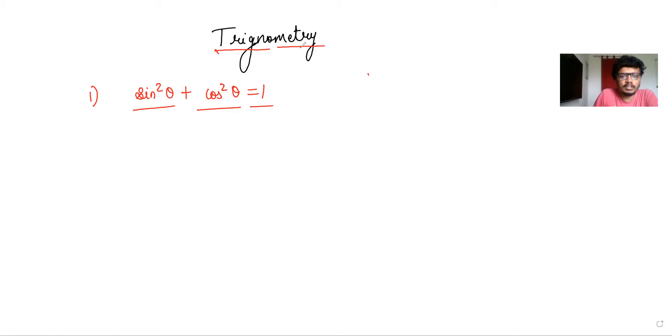Before we start proving this identity, let's understand the meaning of the word trigonometry. Trigonometry is a word from Greek origin in which trigon means triangle and metry means measure.